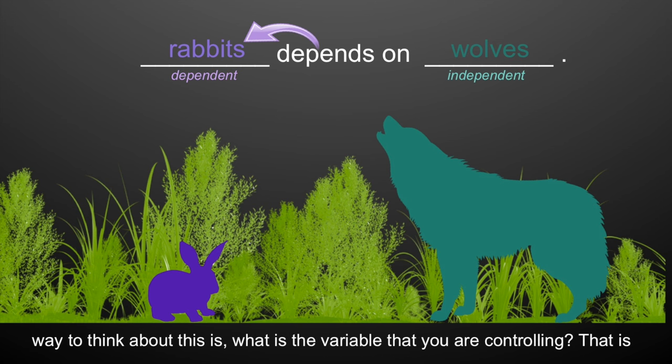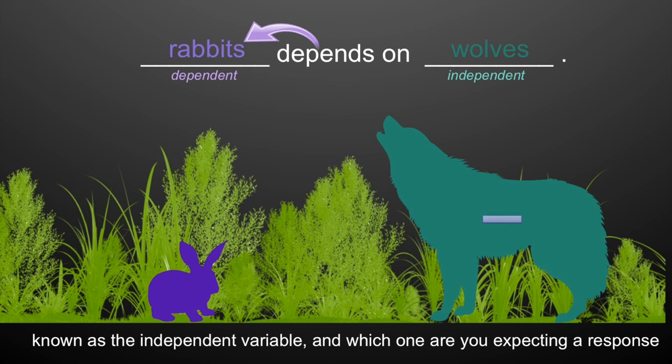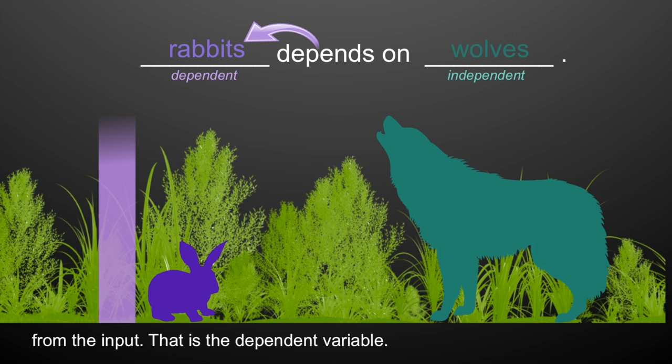Another way to think about this is: what is the variable you're controlling? That's known as the independent variable. And which one are you expecting a response from the input? That is the dependent variable.